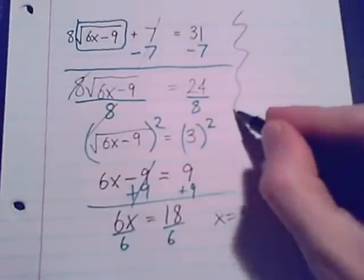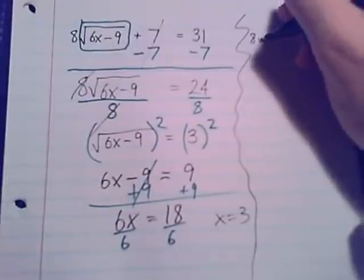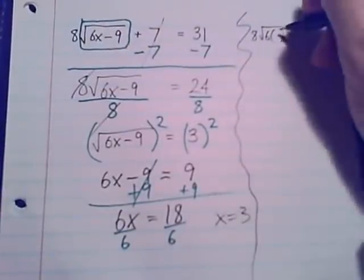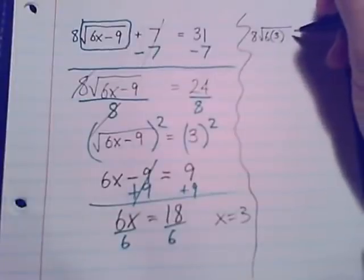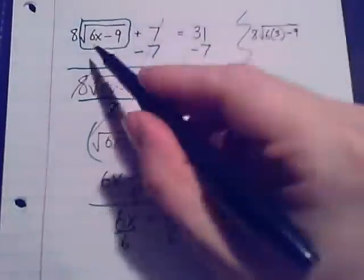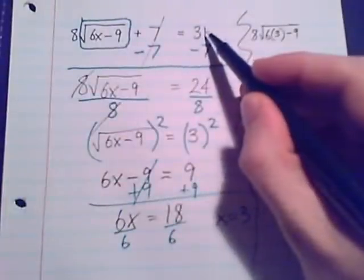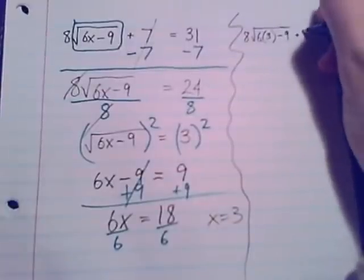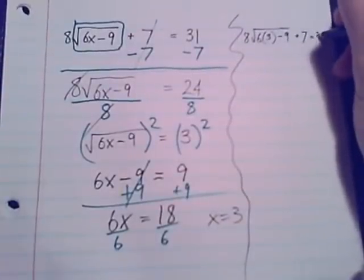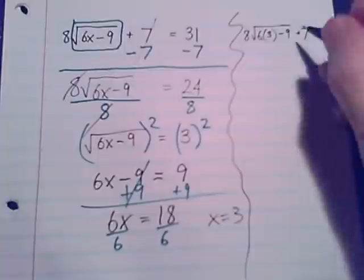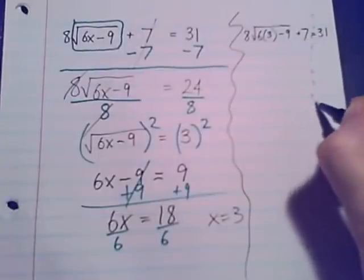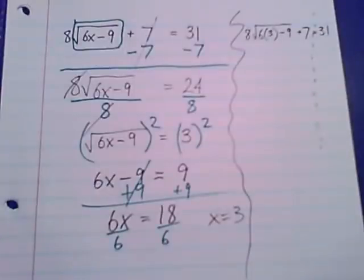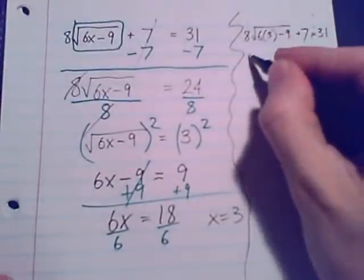Let's check it. 8 times square root of 6 times 3 minus 9. So I'm just recopying this equation exactly. Where I had the x, I've got the 3. After that radical, it's plus 7. It should equal 31. Alright. So we're working the left side, hoping to find it equal to 31. We've got to work inside the radical.